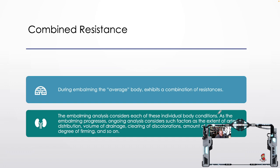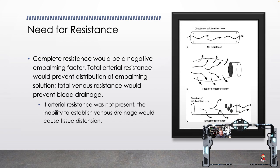During embalming, the average body exhibits a combination of resistances. The embalming analysis considers each of the individual body conditions. As embalming progresses, ongoing analysis considers such factors as the extent of arterial distribution, volume of drainage, clearing of discolorations, amount of tissue distension, and degree of firming.